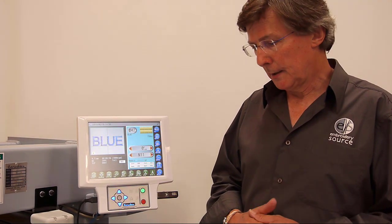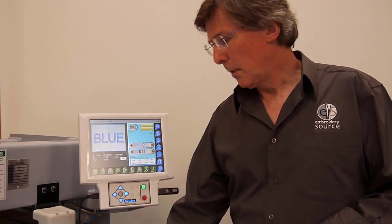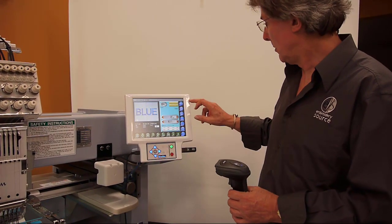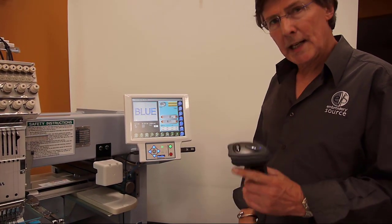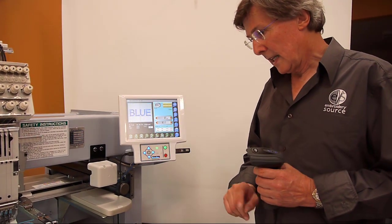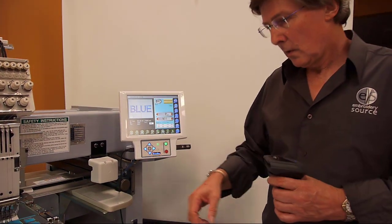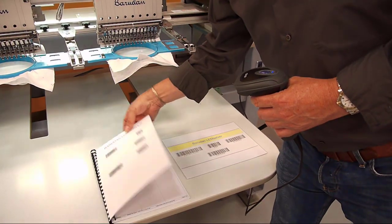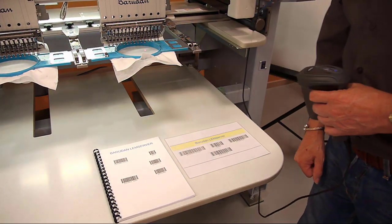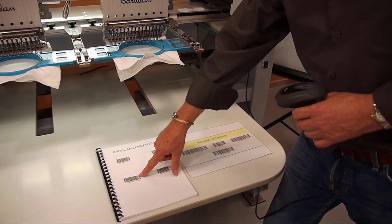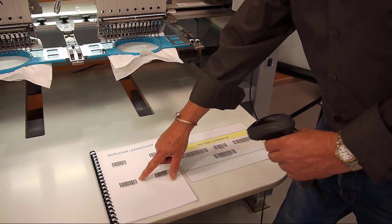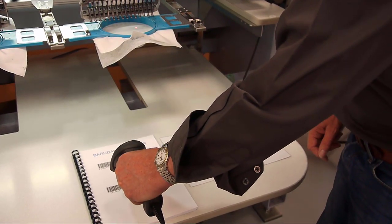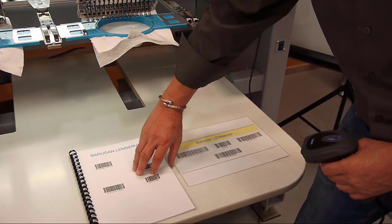There's one other method that I'm going to show you, and this is the fastest method of all, and that's using the barcode scanner. We have a barcode scanner plugged into the machine at the moment. So all I have to do is scan a barcode, which you can see on the front of the folder here. The barcode here is search USB. So I simply scan that barcode, and then I scan the name of the design.